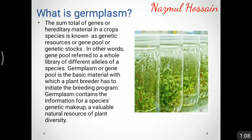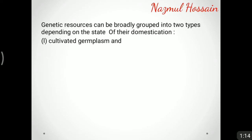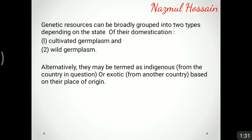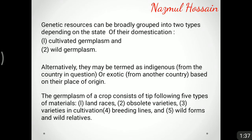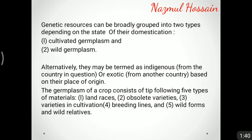Germplasm contains the information of a species' genetic makeup, which is a valuable natural resource of plant diversity. Genetic resources can be broadly grouped into two types depending on the state of their domestication: cultivated germplasm and wild germplasm. Alternatively, they may be termed as indigenous or exotic based on the place of origin. The germplasm of a crop consists of five types of materials: land races, obsolete varieties, varieties in cultivation, breeding lines, and wild forms and wild relatives.